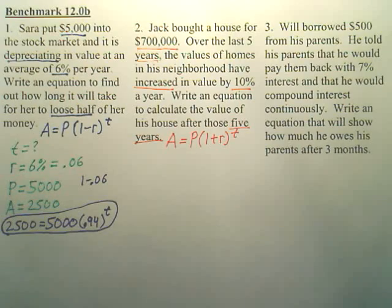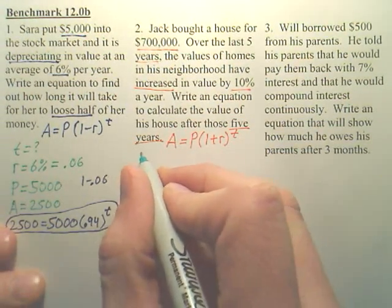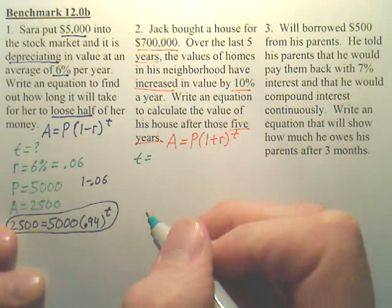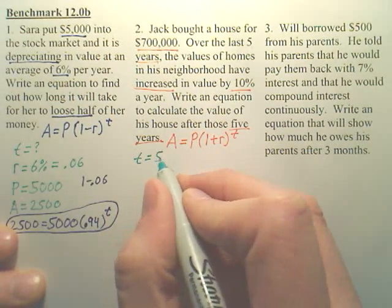Next thing is, you have to figure out what's A, what are your values? So let's start with time. Do we know our time? Our time is given, it is five years.